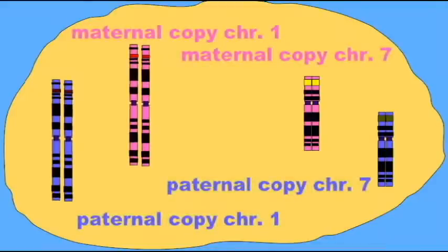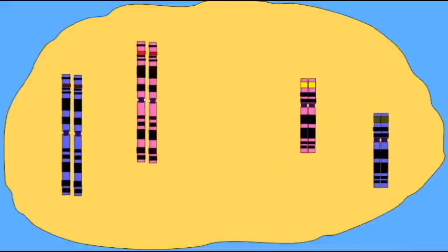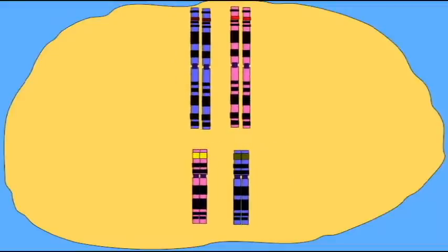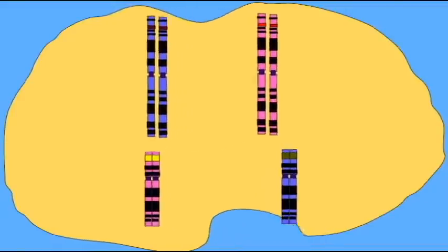This independent assortment will apply to the genes which are on these chromosomes as well. If the chromosomes are assorting independently, then genes which are on different chromosomes will also assort independently.